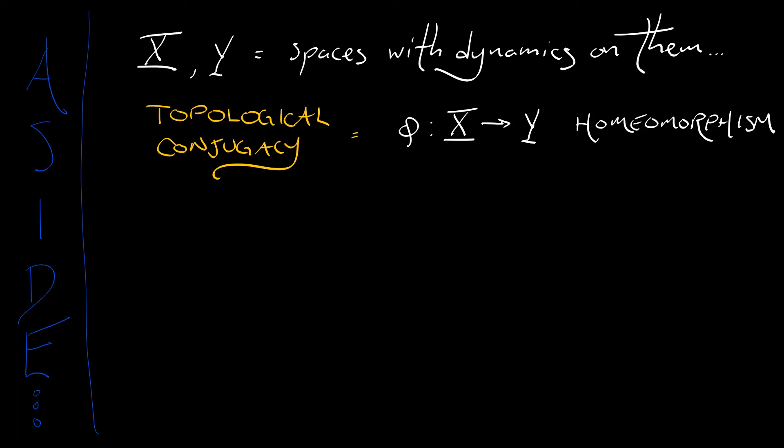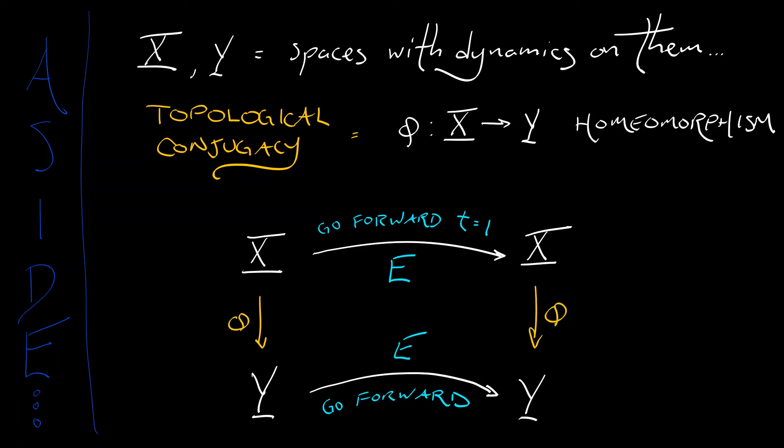What I mean by that is if we take our space X and we look at the dynamics of going forward one time step, either continuous time or in discrete time one hop forward, then looking at what happens with the space Y where we do the same thing. We go forward one time step and we look at that mapping. Then if we use that topological conjugacy to map from X to Y, the resulting square of mappings is commutative.